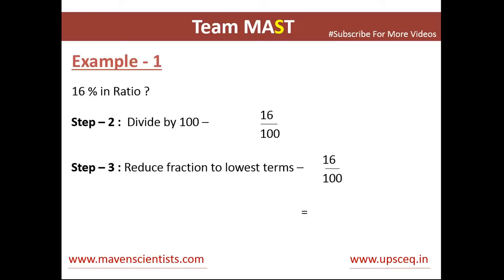In the first example, we have 16%. To convert 16% into a ratio, we divide by 100 to get 16 divided by 100. We then reduce it to the lowest fraction terms by dividing both terms by 4, and we get 4 divided by 25, which is the answer.